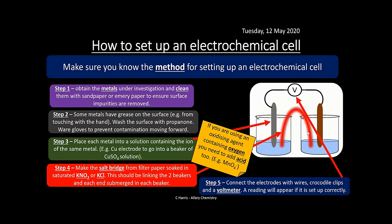The voltmeter will show a reading if the cell is set up correctly. It is measuring the potential difference across the two electrodes, in units of volts.